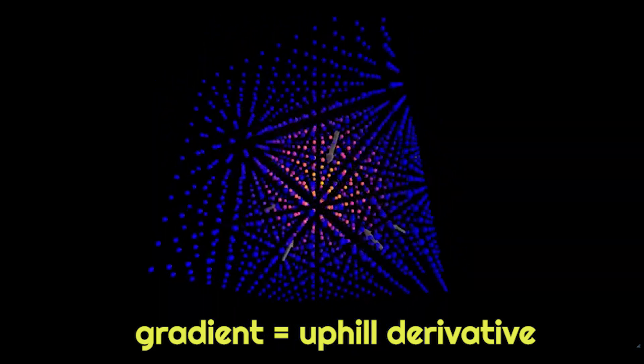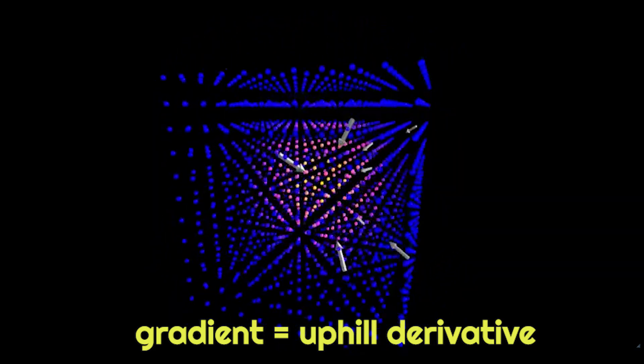For example with a temperature field the gradient will tell you where the heat sources are. With the electric dipole the gradient goes around from one charge to the other.